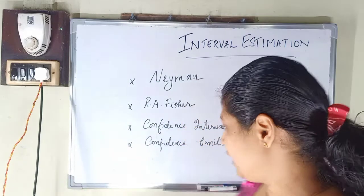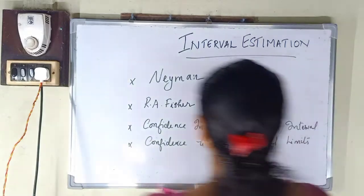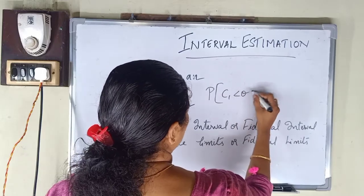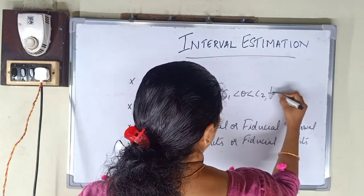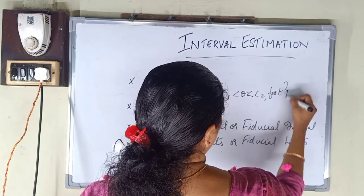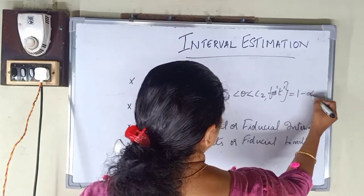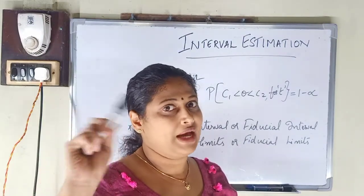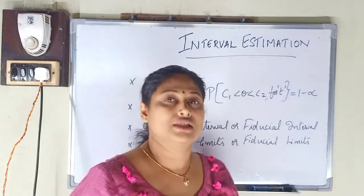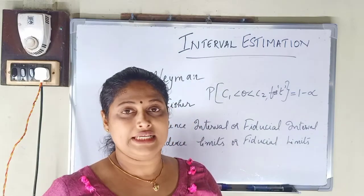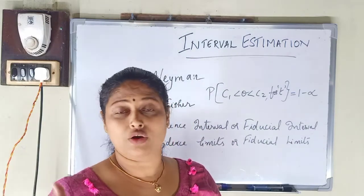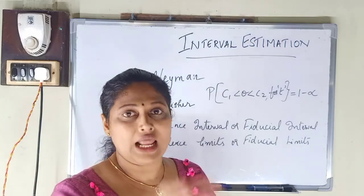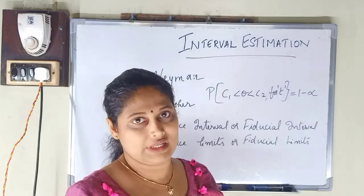We need to describe the probability: probability of C1 less than theta less than C2, for any given values of T, is equal to 1 minus alpha. The maximum probability is 1 minus alpha; alpha is 0.05 or 0.01, that is 95% or 99%. We are sure that the population parameter lies in between those two intervals.